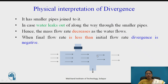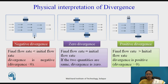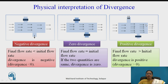When the final flow rate is less than the initial flow rate, divergence is negative. In general: when outward flow is less than inward flow, divergence is negative (less than zero); when final and initial flow rates are equal, divergence is zero; and when the final flow rate is greater than the initial flow rate, divergence is positive (greater than zero).